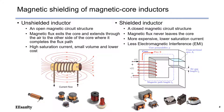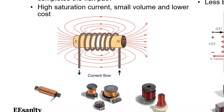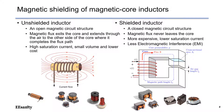There are two types of magnetic shielding for magnetic core inductors: unshielded and shielded. Unshielded inductors have a magnetic routing core made up of air, meaning their magnetic lines are entirely exposed to the air without any magnetic shielding. The picture shows rod-like and drum-like cores of unshielded inductors. Unshielded inductors have an open magnetic circuit, and the magnetic flux extends through the air to complete the flux path. They usually have higher saturation current, small volume, and lower cost.